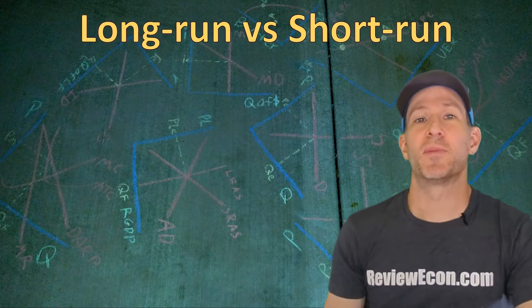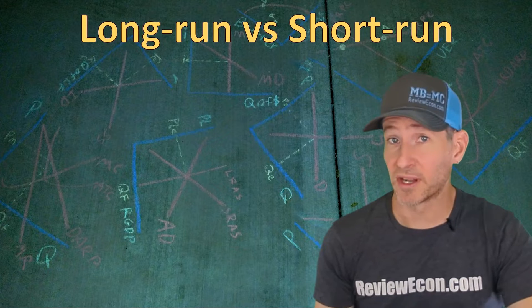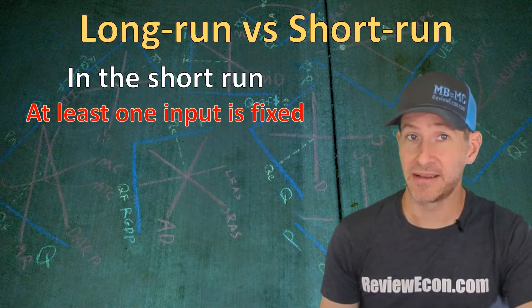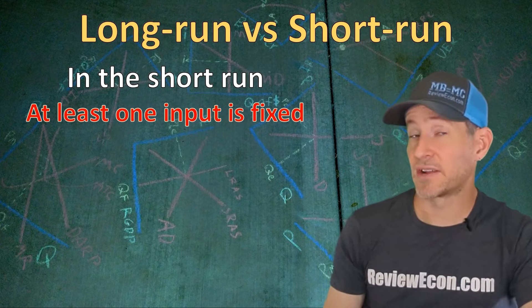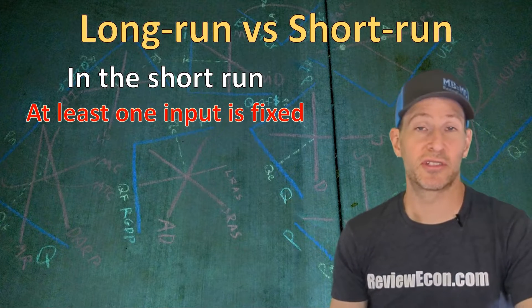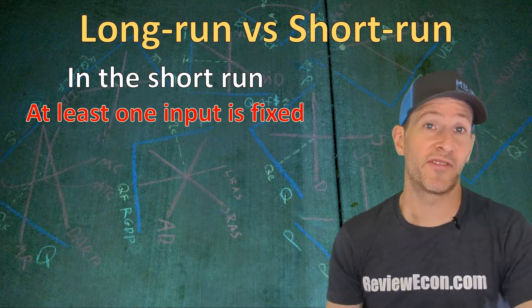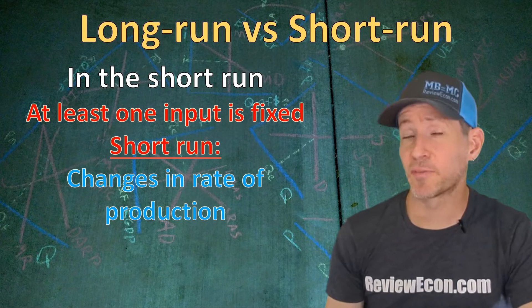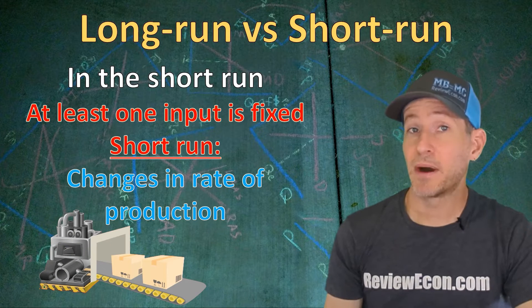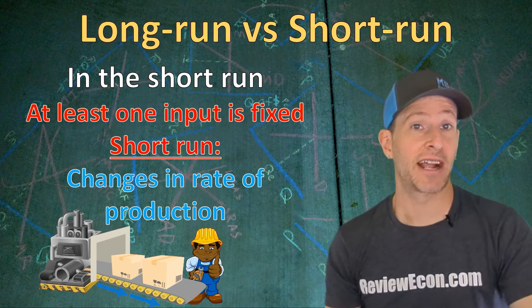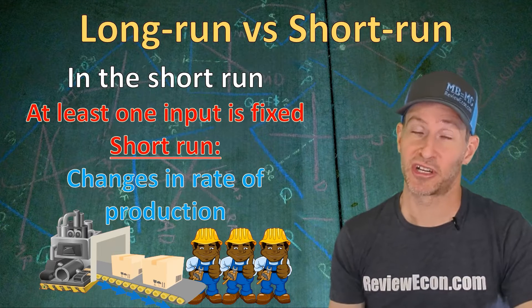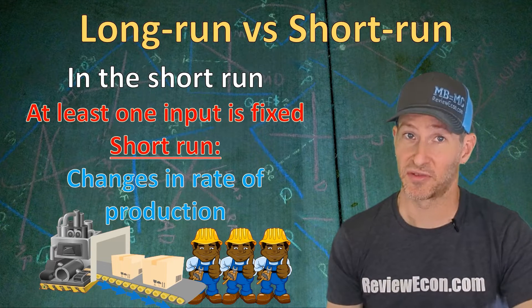First, we need to remind ourselves about the difference between the long run and the short run. In the short run, we are going to have at least one input that is fixed. We can change the amount of labor, electricity, or raw materials used in production, and changing those inputs will affect the rate of production for a firm. We're going to have fixed amounts of physical capital, but by increasing the number of workers in a factory, we can increase the rate of production.